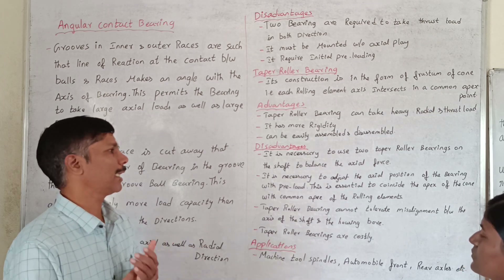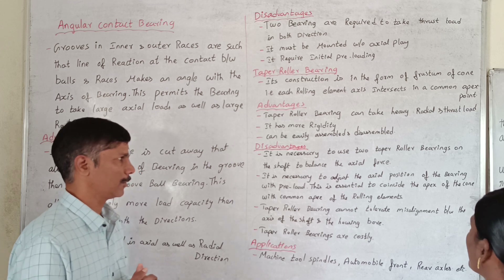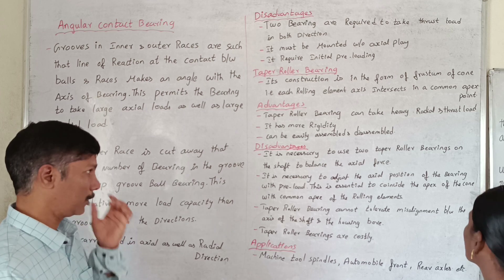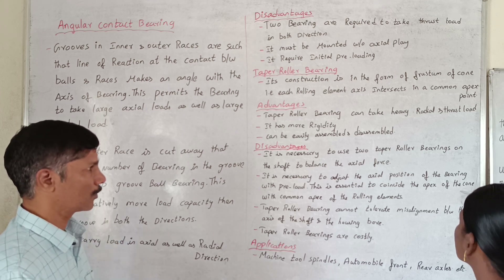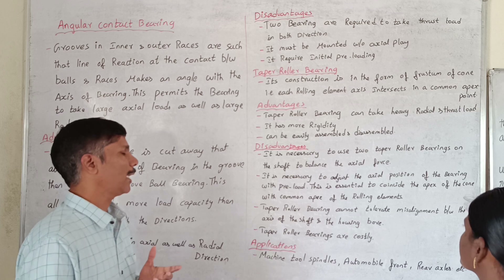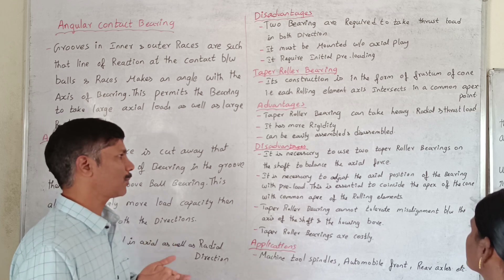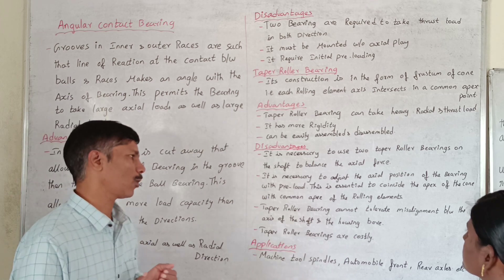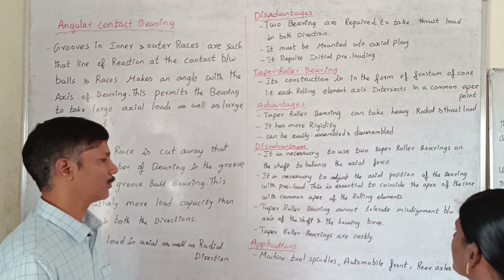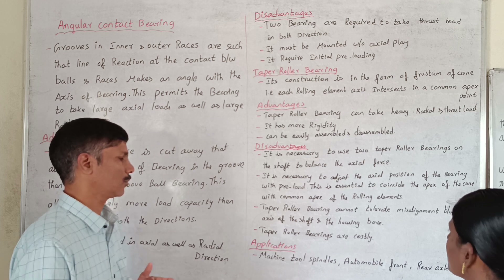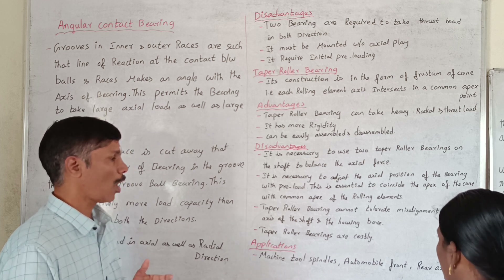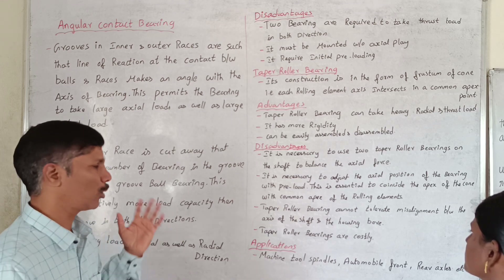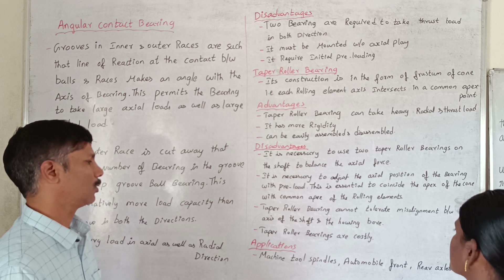It is necessary to adjust the axial position of the bearing with preload, which is essential to coincide the apex of the cone with the common apex of the rolling element. Tapper roller bearing cannot tolerate misalignment between the axis of the shaft and the housing bore. Tapper roller bearings are costly.